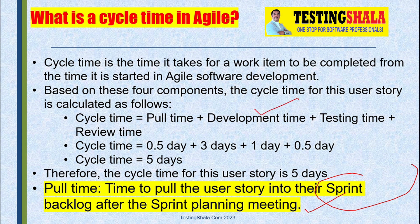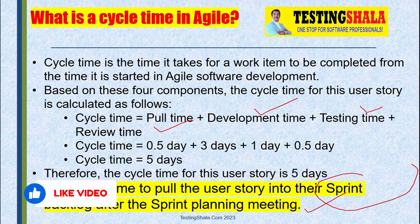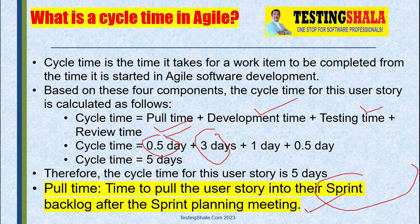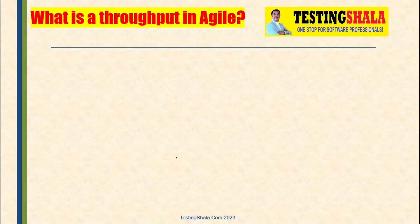For example, pulling the user story from the backlog takes about half a day, sprint planning and implementation takes three days, testing takes one day, and review takes 0.5 days — giving an overall cycle time of five days.